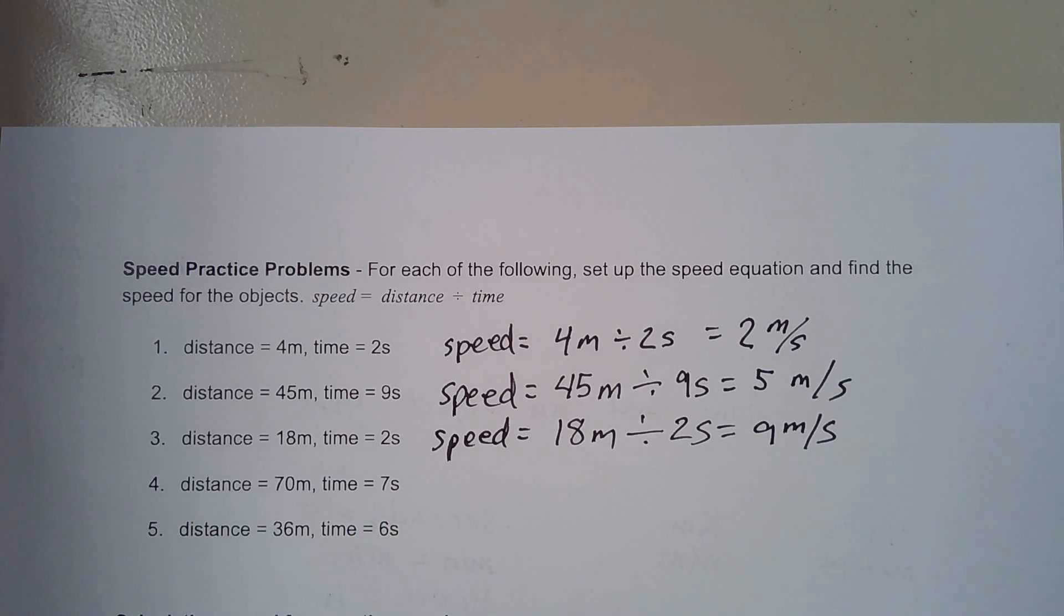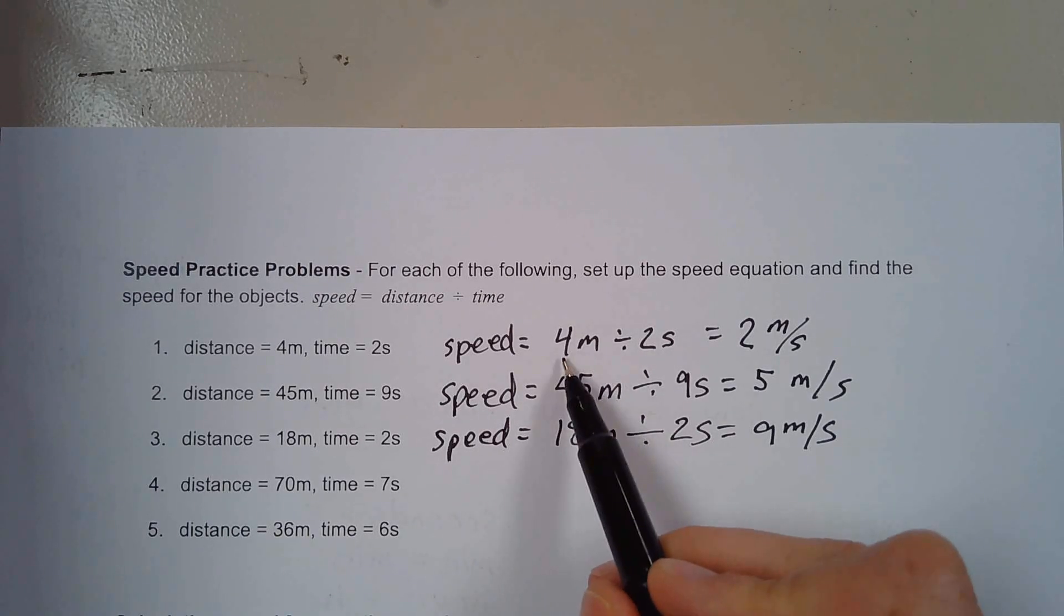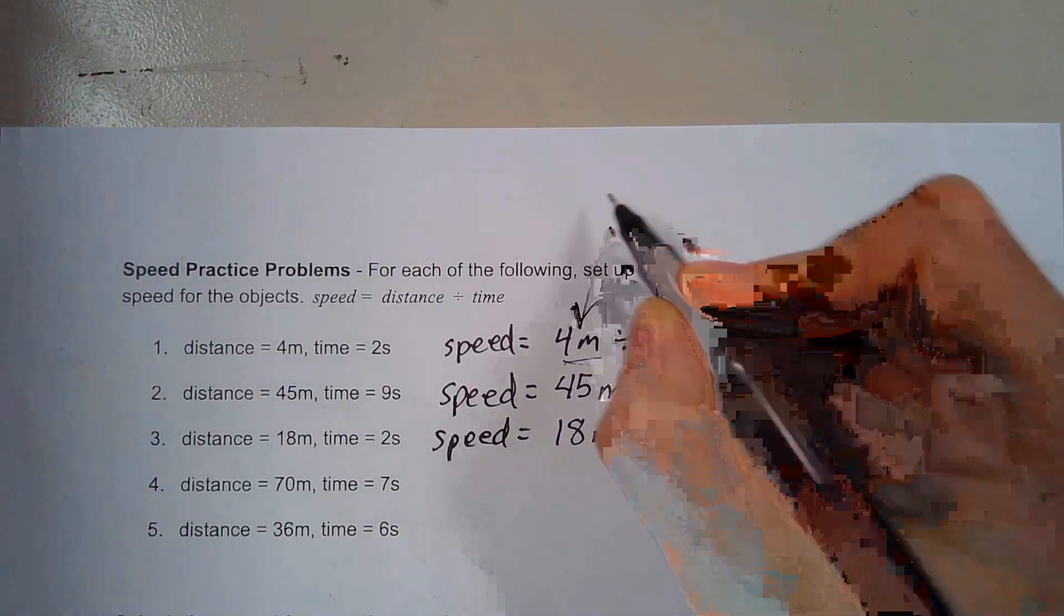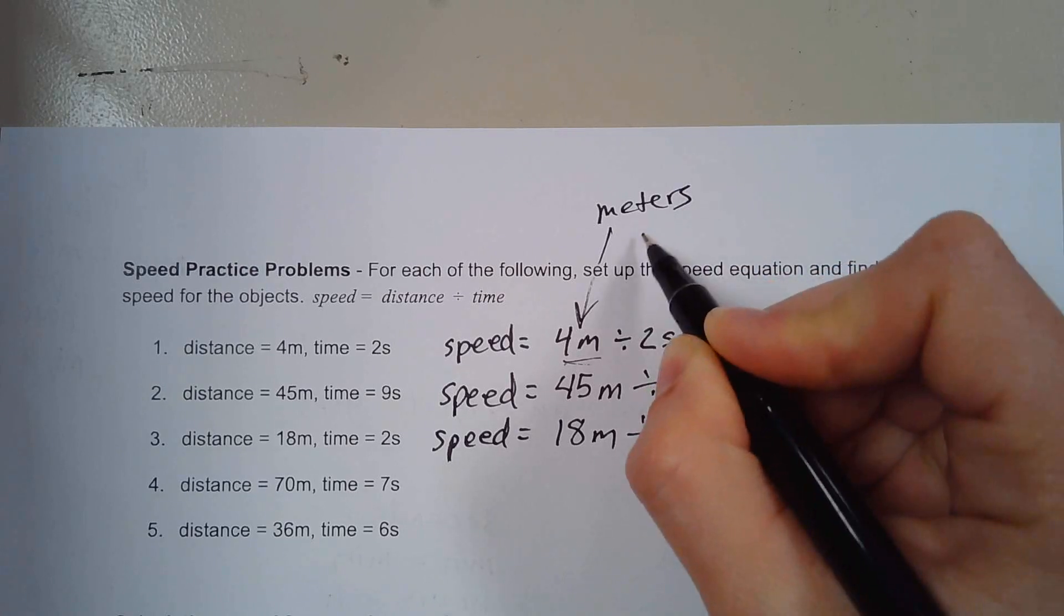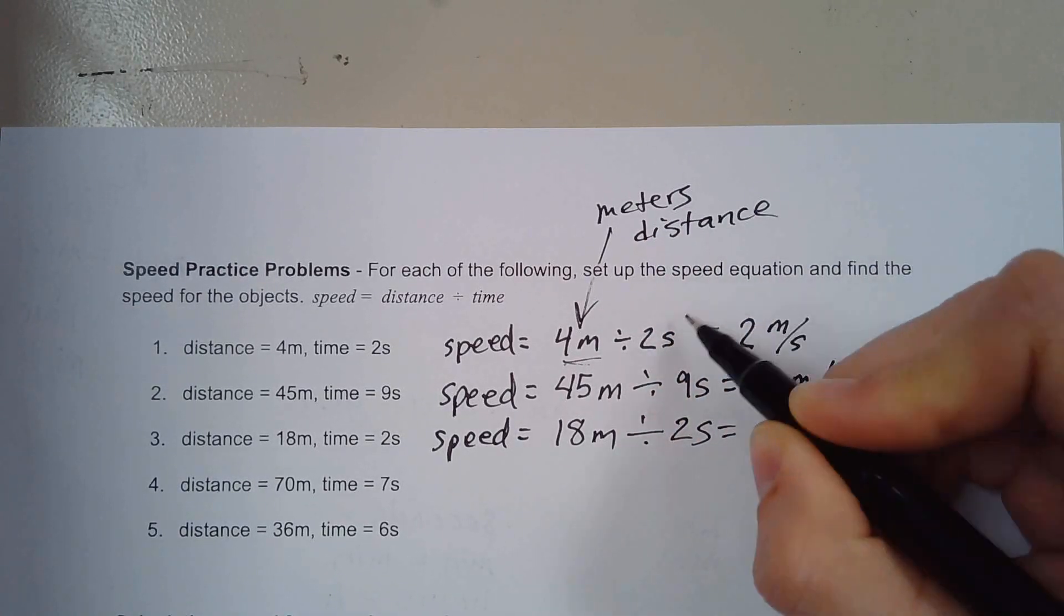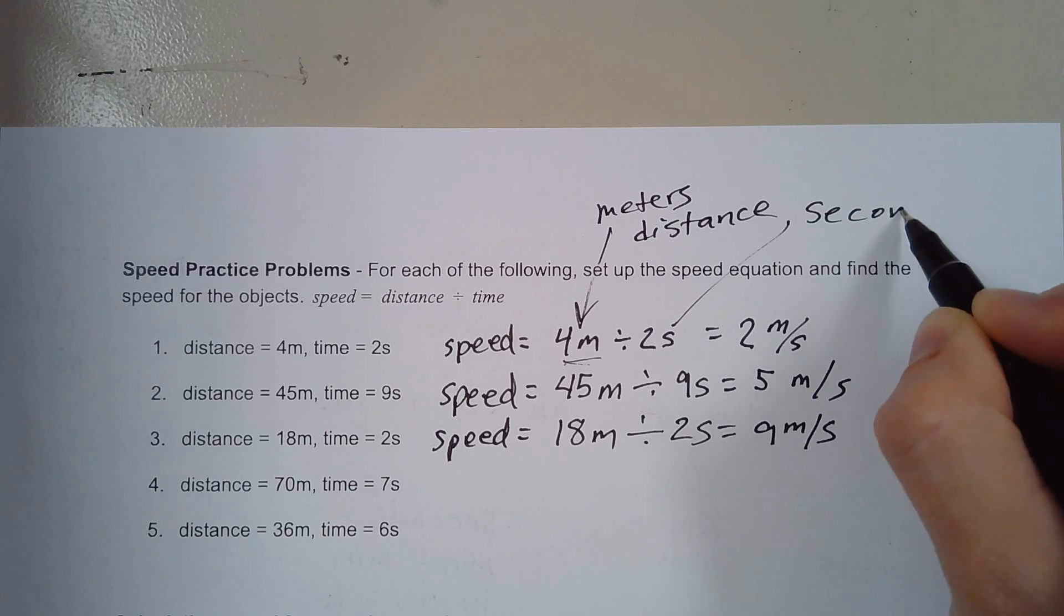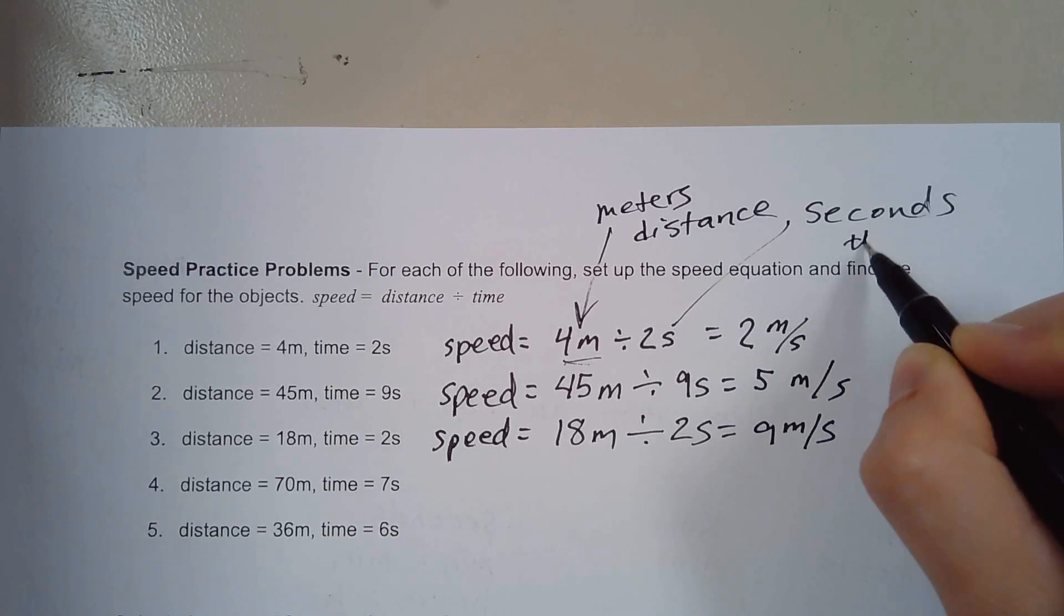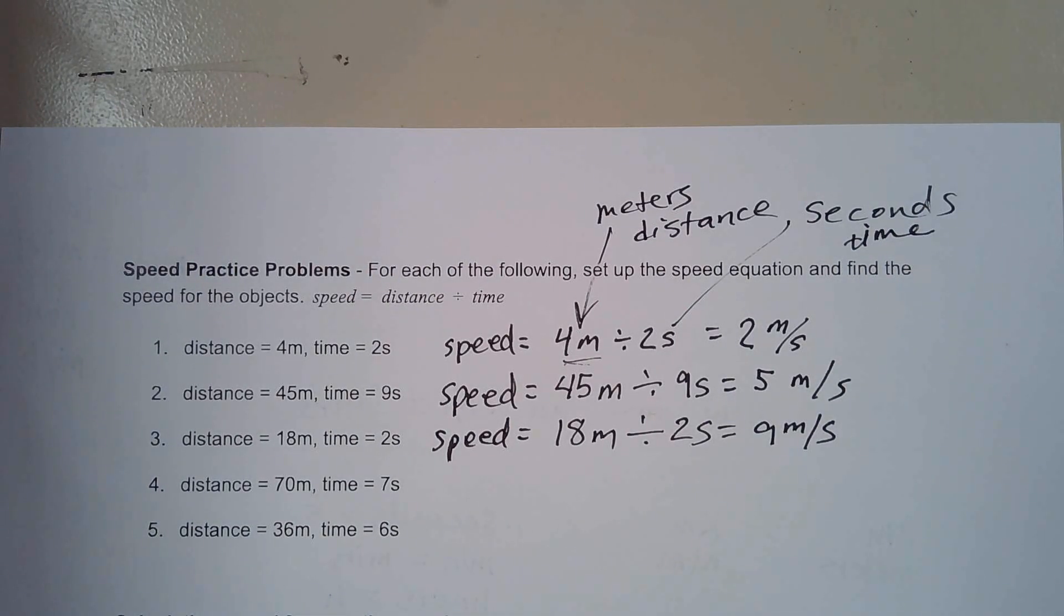So it's important that you know we have to do the distance divided by the time. And if you set this up, you'll see m is meters, which is a unit of distance. S is seconds, which is a unit of time. So make sure that you write this out each time.